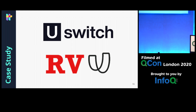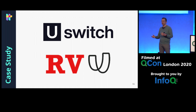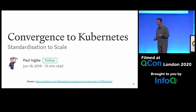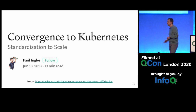I want to talk about another example: uSwitch. For people in the UK, uSwitch should be very familiar — they help compare different utility providers and home services and make it easy to switch between them. A couple of years ago I saw an article by Paul Ingalls talking about 'convergence to Kubernetes,' and I thought this article was really good at bringing together what is the technology we're trying to adopt, how does that help our teams, and also bringing some data in to look at this in a more meaningful way.